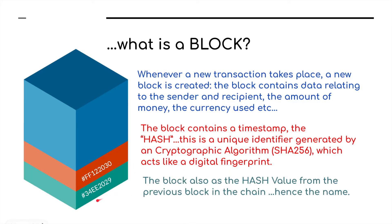The block also contains other information, such as the hash value of the previous block in the chain — hence the name blockchain. All of these are connected together to give us one big chain of transactions, with each one identifying the previous block in the chain, which makes it very, very difficult for anybody to attempt to hack it.